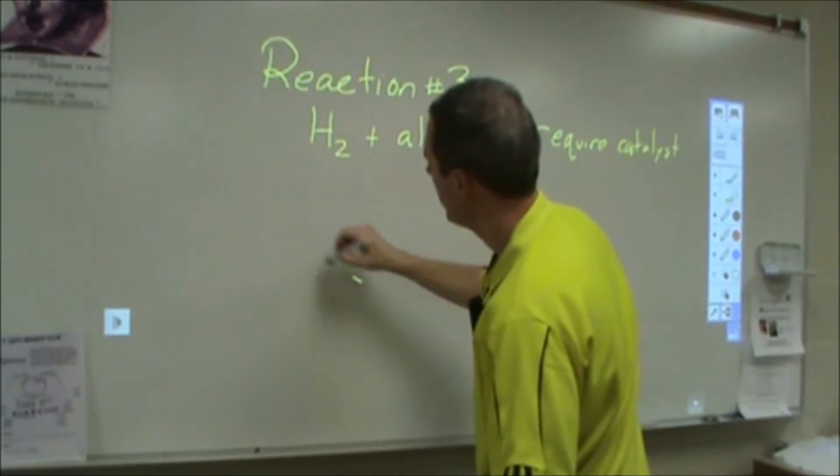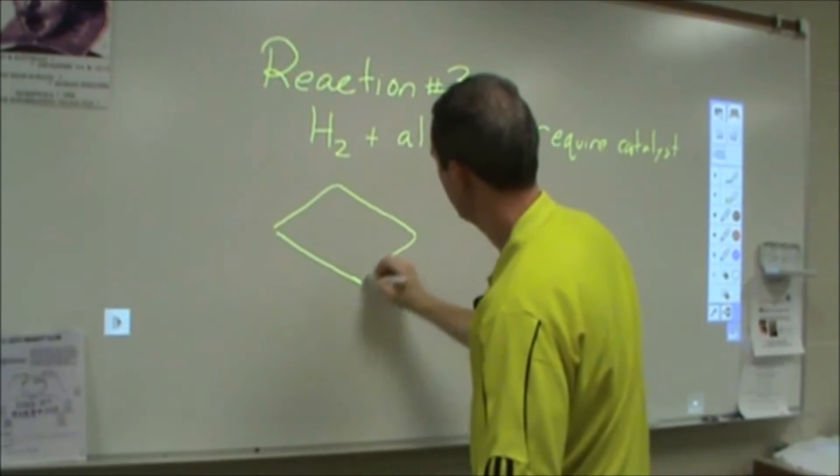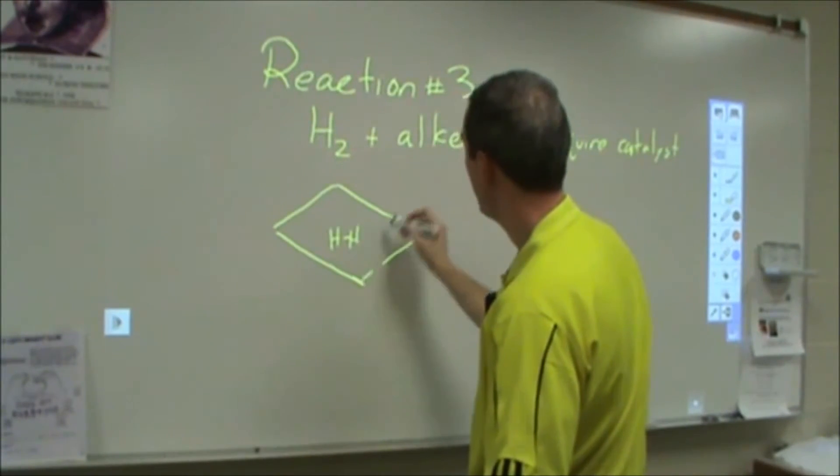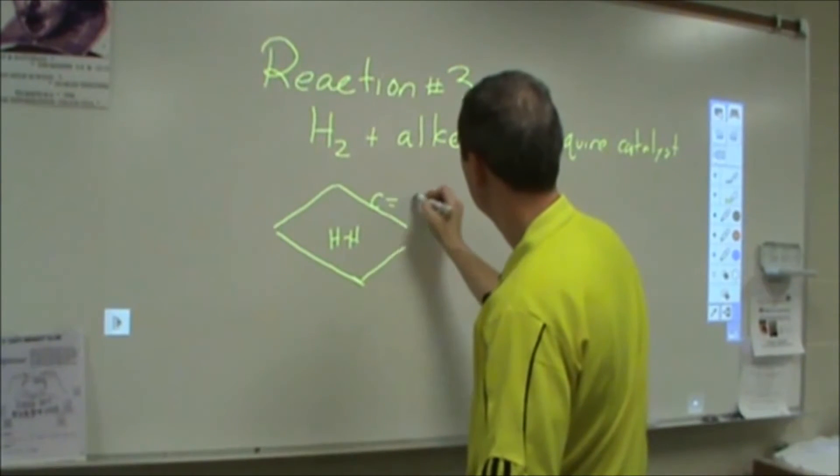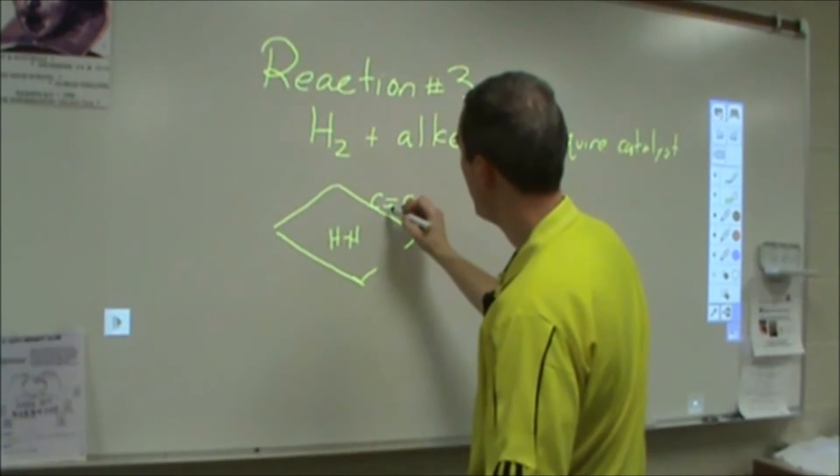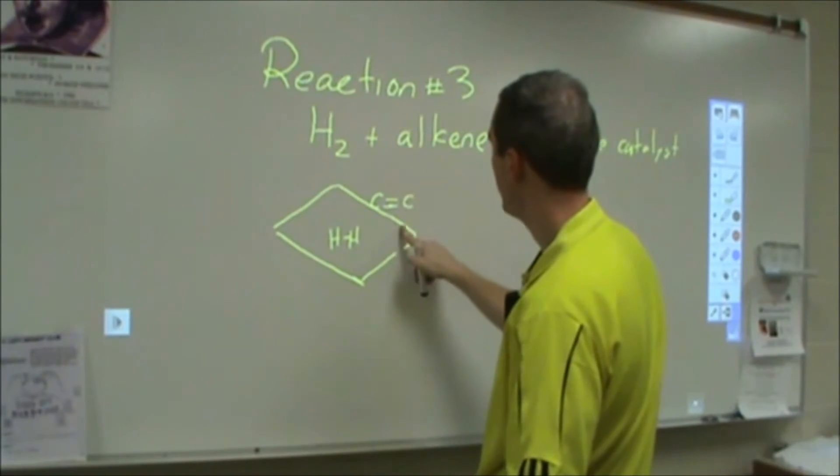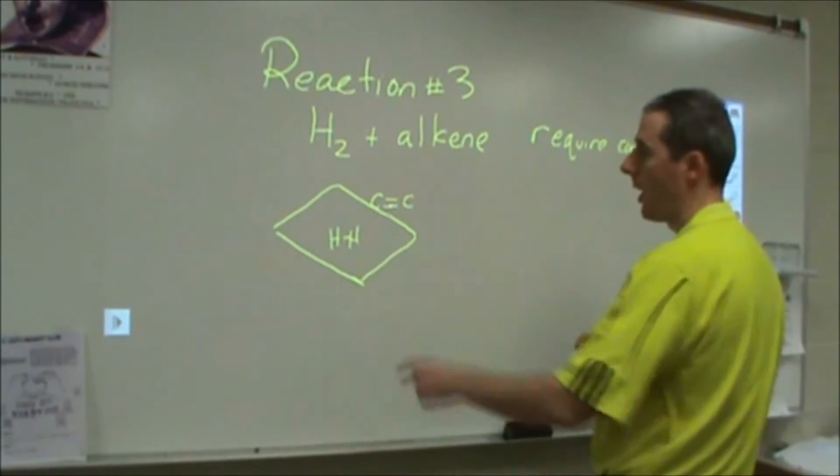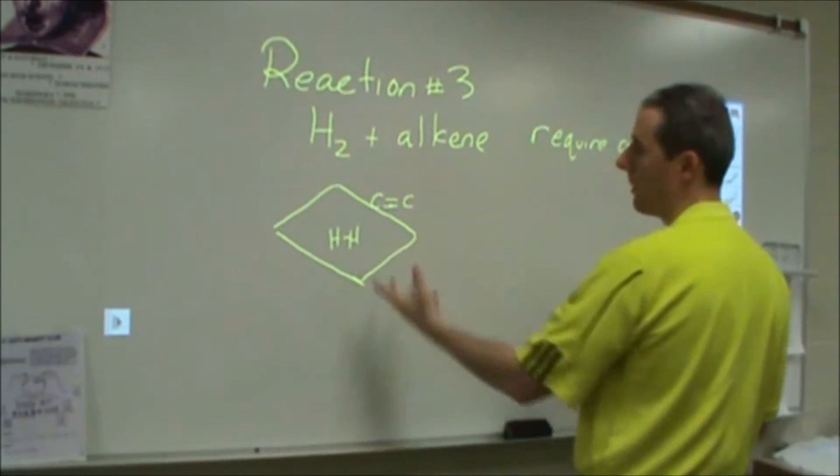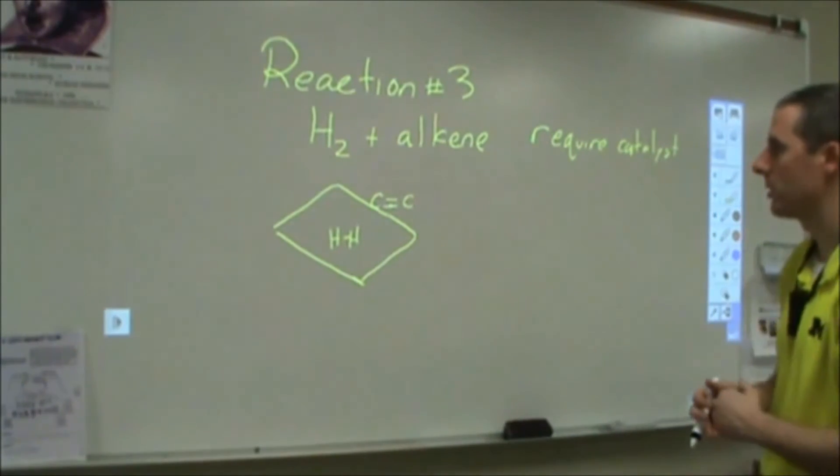And what happens is at the surface of the metal, the hydrogen molecule will bond to the metal, and then the alkene, one of its bonds will be disrupted and the electrons instead will interact with the metal. And then those hydrogens will then be able to add to this while they're both attached to the surface of the metal.